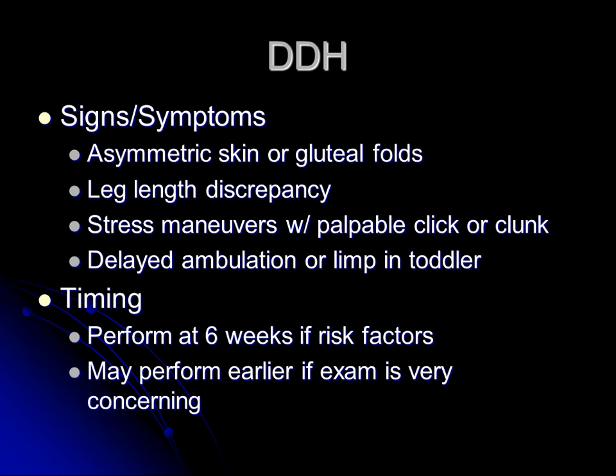The timing of the exam — optimally I like to perform it at about six weeks of age if there are risk factors. If the hip is grossly abnormal on the newborn exam, it's fine to go ahead and do it as a newborn. I prefer to wait about six weeks in mildly abnormal cases or when they just have risk factors, because you'll get a lot of physiologically immature hips and end up doing a lot of follow-ups. If we can wait until six weeks until they're more mature, we can establish them as normal and they don't have to come back.